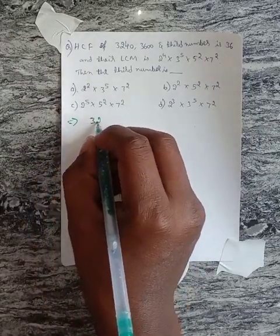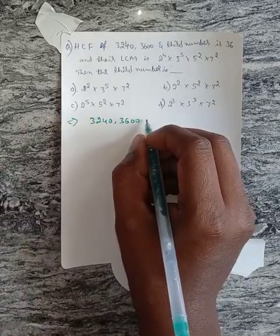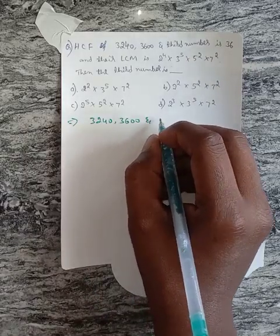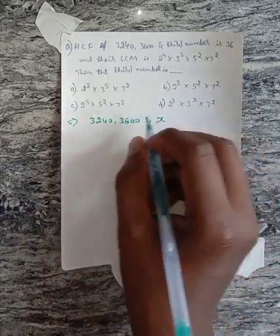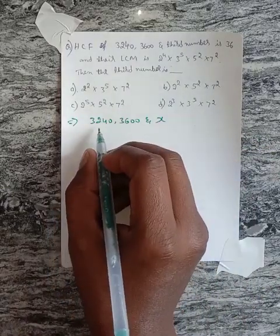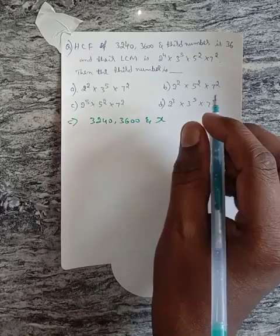We are given 3240, 3600, and a third number, let's call it X. The HCF of these three numbers is 36. That is, the common terms from these three numbers is 36.